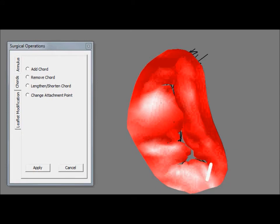However, this is a pathological valve. There are regions in which the leaflets don't co-act, leading to regurgitation during the cardiac cycle.